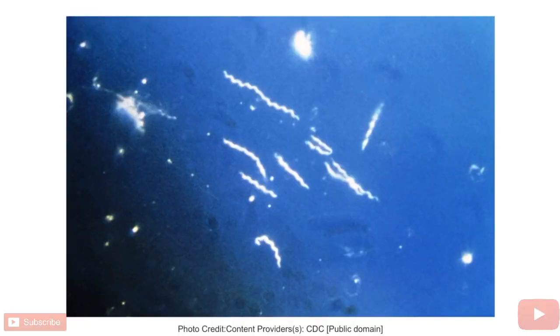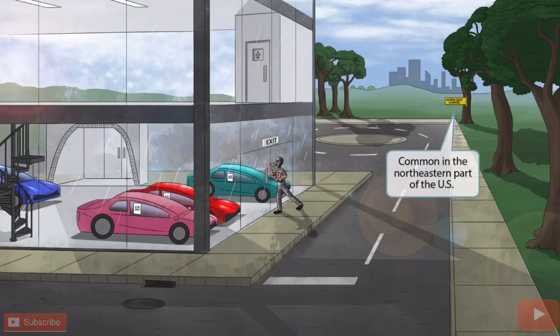This is an image of Borrelia burgdorferi using a dark field microscopy technique. As you can see, the organism is spiral shaped.